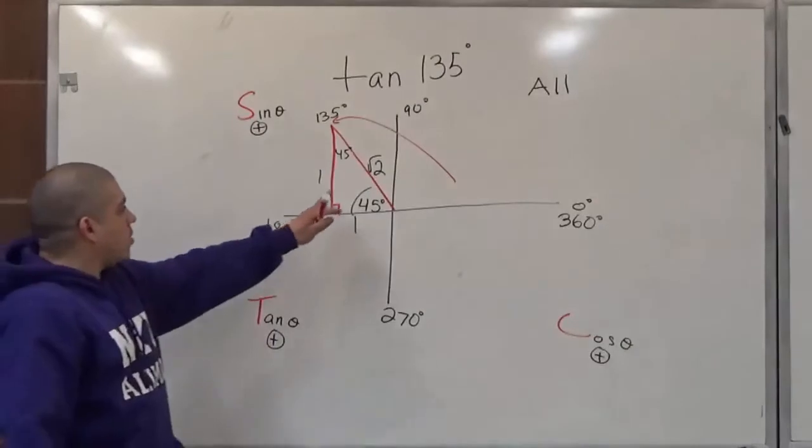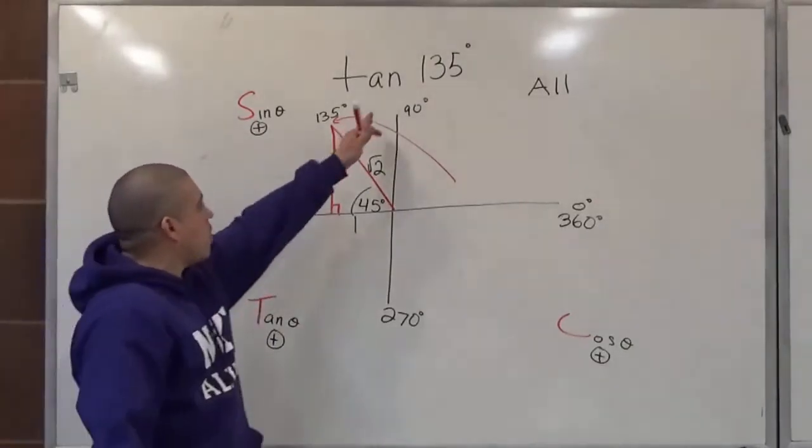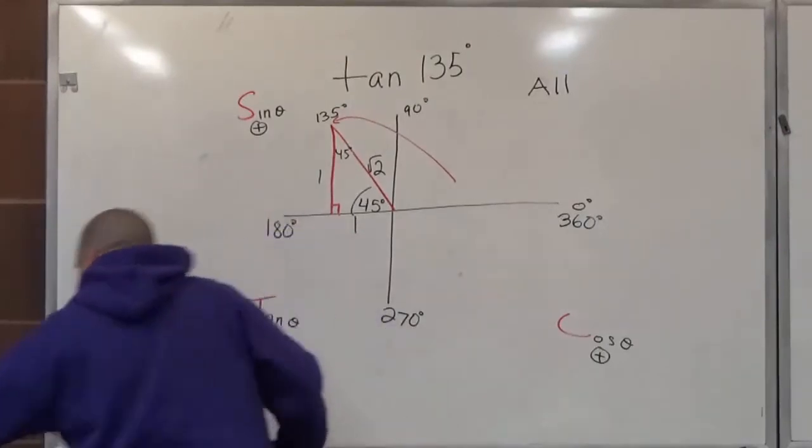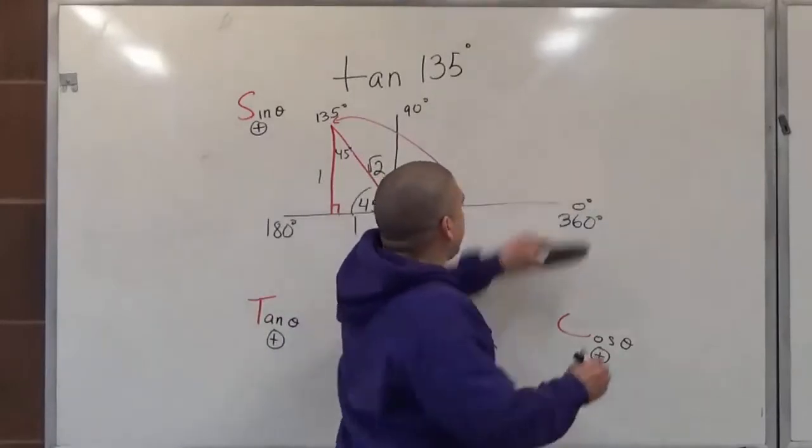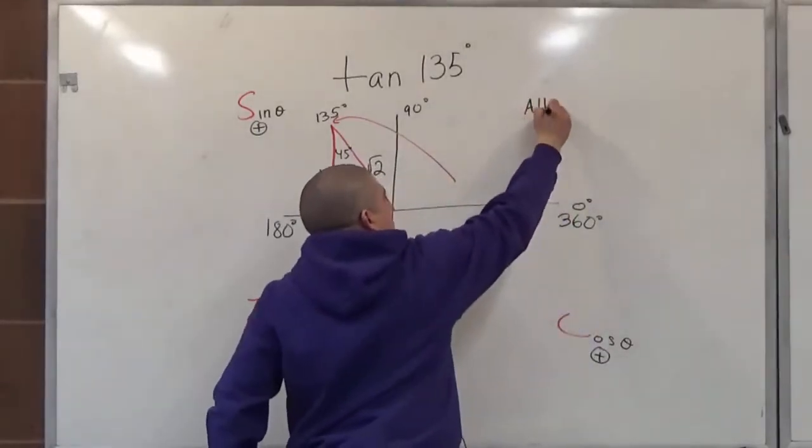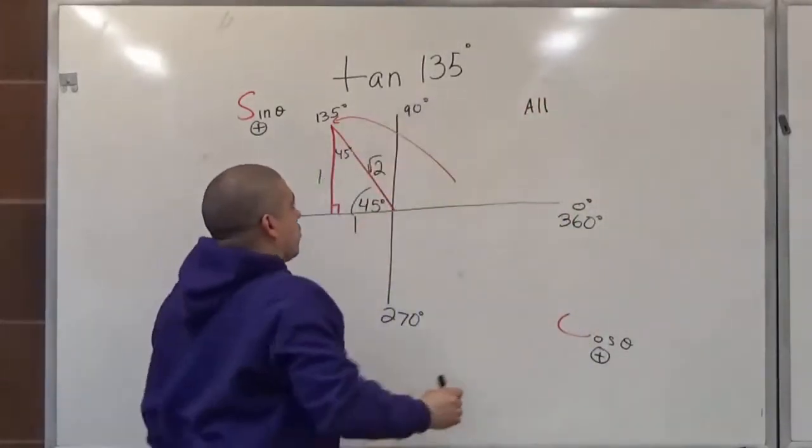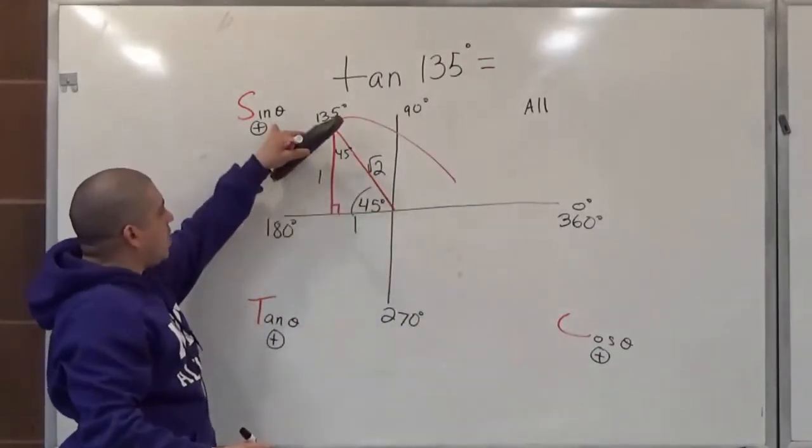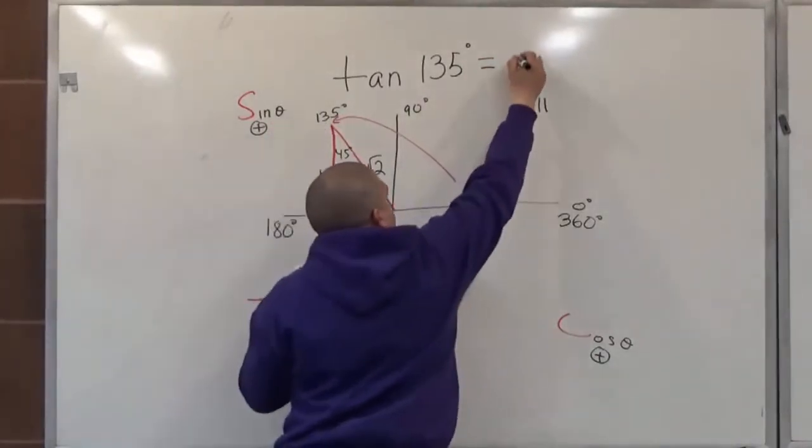So we want to figure out sine of 135 degrees, tangent of 135 degrees. So tangent of 135 degrees is equal to, let me bring this down a little bit over here. So the tangent of 135 degrees, since we're in this region and only sine is positive, then tangent has to be negative.